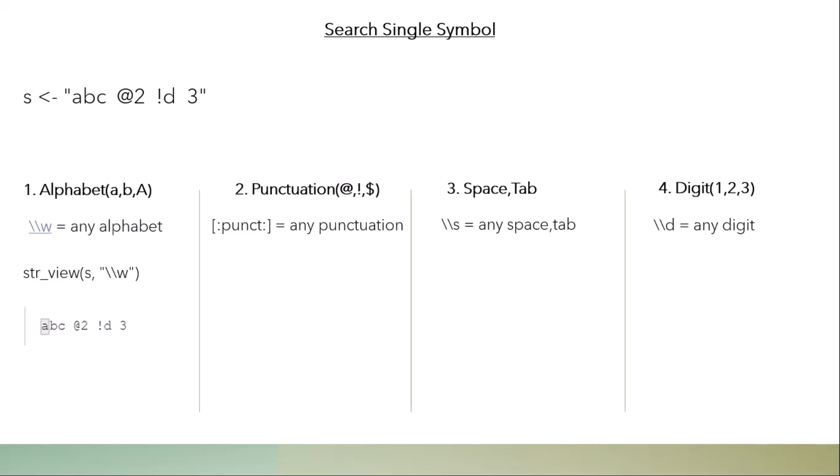Similarly, if you want to extract a punctuation symbol — there are two punctuation symbols in the string, including the at-sign — you use `str_view`. All regular expressions are written in double quotes. When you run this command, it returns the first punctuation symbol, which is the at-sign.